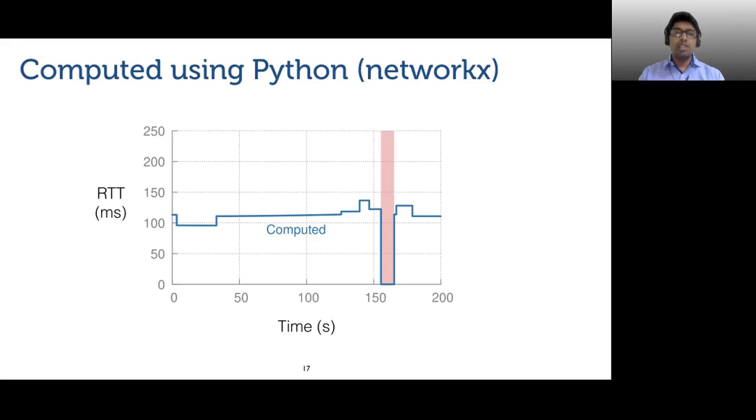Also, the path sees a disruption around 160 seconds, shown as the shaded region in the plot. We found that for this period, Saint Petersburg does not have any visible Kuiper satellites at sufficiently high angles of elevation, which obviously results in the satellite network path being disconnected.